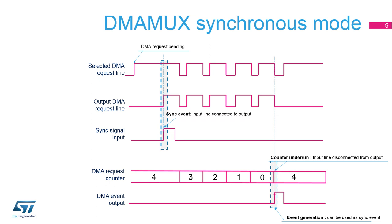For each underrun of the counter, a request multiplexer line can generate an optional event to synchronize with a second DMA-MUX line. The same event can be used in some low-power scenarios to switch the system back to stop mode without CPU intervention. Synchronization mode can be used to automatically synchronize data transfers with a timer, for example, or to trigger the transfers on a peripheral event.